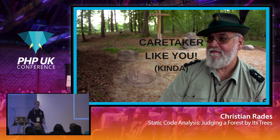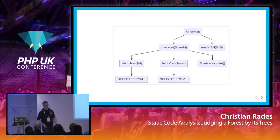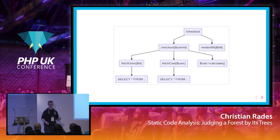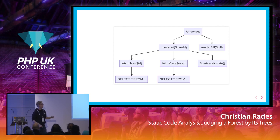I mean, you don't go out in the forest and cut down trees, but the metaphor still works, probably. What kinds of trees does your application contain? Here's a little example — it's just a pseudo call trace. You have a controller at the checkout route; the checkout will fetch some users from the database, fetch a cart from the database, calculate the bill, and then render it. A normal call graph.